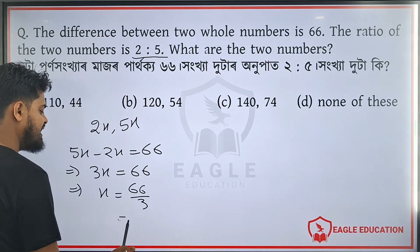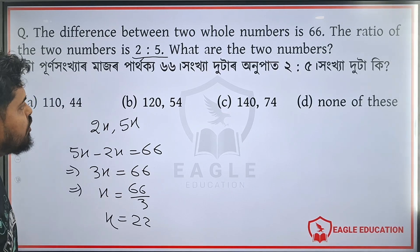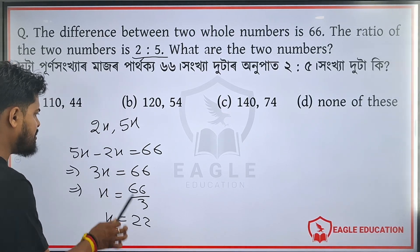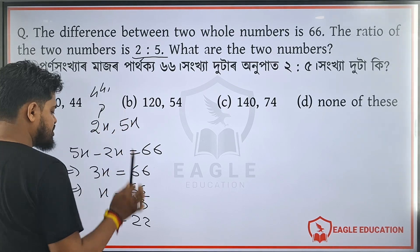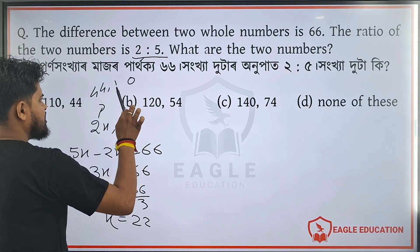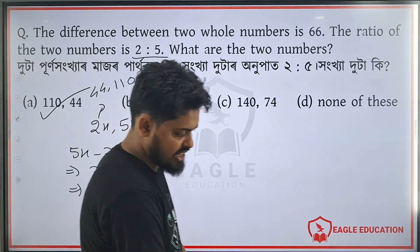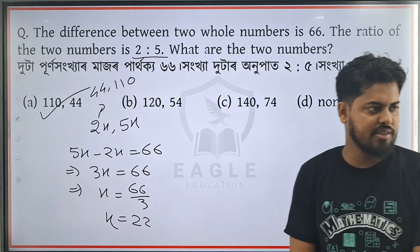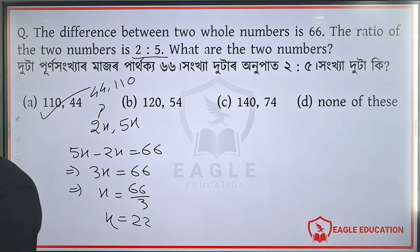So if you have the difference, 2x minus x equals 66. Solving, x equals 22. Therefore the two numbers are 44 and 110. So this is the correct answer.